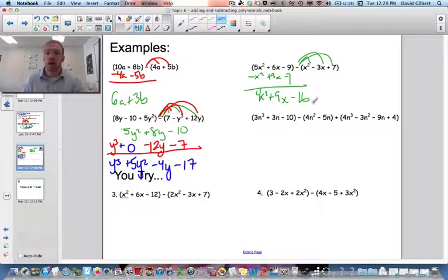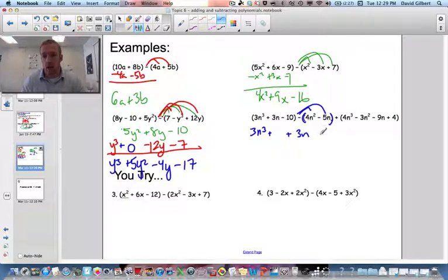And here we go. One last one. This only gets applied to this set of parentheses. Only one in which it's in front of. So I have 3n³ plus there's no n² plus 3n minus 10.